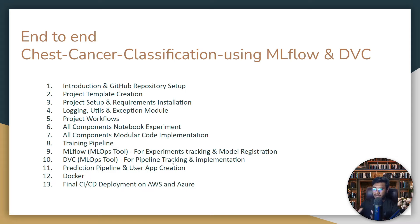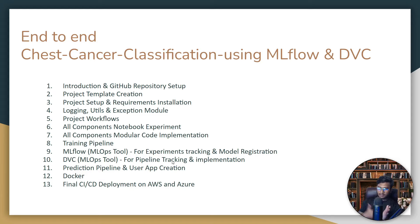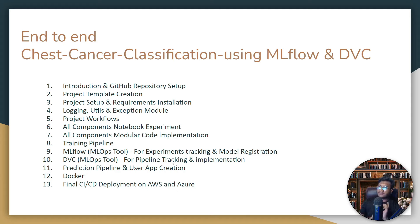Then I'll create the prediction pipeline and user application. Whenever the user gives some image — let's say a chest CT scan image — it should predict whether the chest is affected with cancer or not. We'll be creating one web application where the user passes an image, it automatically gives the prediction and shows it on the right-hand side. After that, we'll build the Docker image of our source code, because we'll be following CI/CD deployment on both AWS and Azure cloud. Many of you requested Azure deployment since I've previously shown AWS deployment.